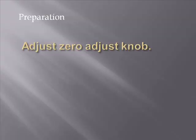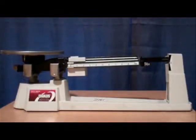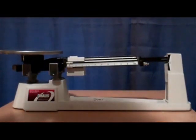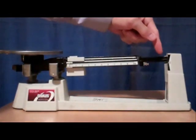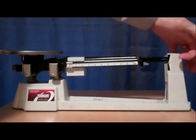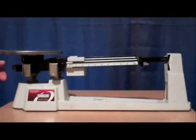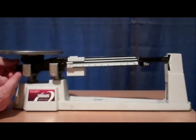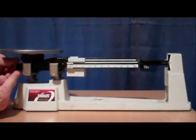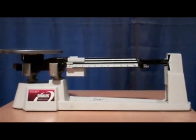The third step in preparing the triple beam balance for use is to adjust the zero adjust knob. This scale needs adjustment because the pointer is not lined up with the zero. To do that, you need to work on the opposite side and screw in a small knob until the pointer lines up with the zero.